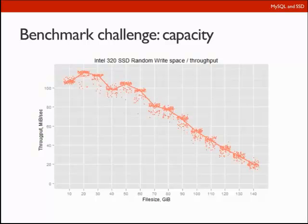Flash vendors tend to publish benchmark numbers from the fresh state, and it is not always easy to understand the real performance at steady state. Another benchmark challenge is capacity: the more space you use, the worse performance may get, because garbage collectors need more free space to operate effectively. As you use more space, less is available for garbage collection. This can be very significant — for example, with an Intel drive, there can be a five-times performance drop when the card is filled to full capacity.